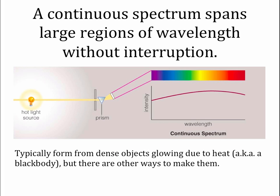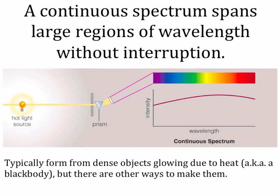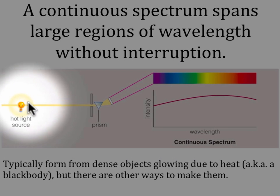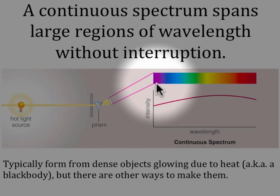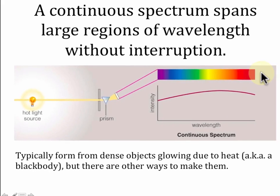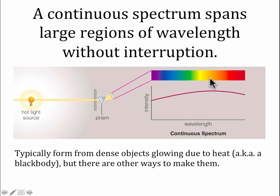Let's talk about the three types of spectra that are most commonly seen in astronomy. The first, which we've actually already talked about, is called a continuous spectrum. A continuous spectrum is any spectrum that spans large regions of wavelength without interruption. This is the type of spectrum that we get from a black body, though there are other ways to make continuous spectra. Here's a good example: we have an incandescent light bulb which is glowing because it's hot. The light goes through a prism, gets spread out into its component colors, and we see all the colors from blue through yellow through red.